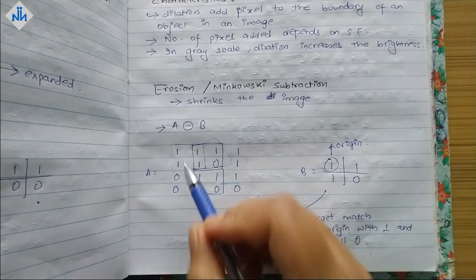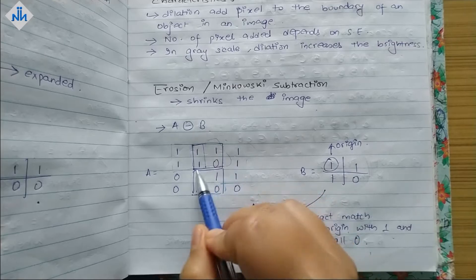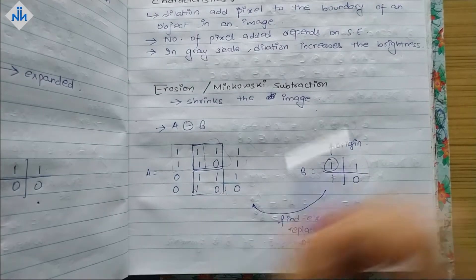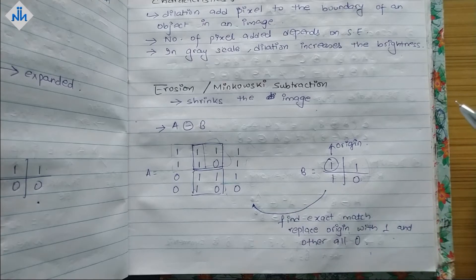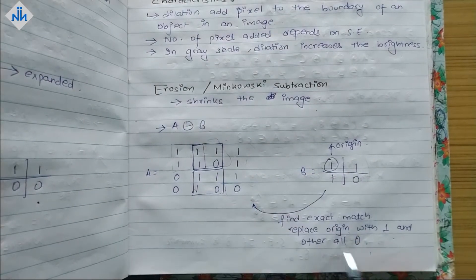So if we see we have an exact match over here and here. One one zero. One one one zero. One one one zero. And similar over here. So when we have an exact match what we will do is replace the origin with one. So this is one. So this will be one and other all with zero.